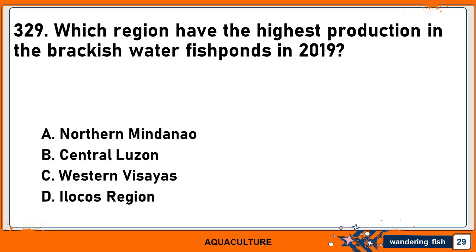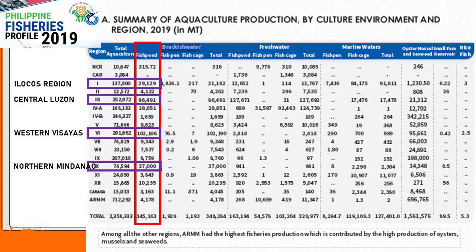Which region has the highest production in brackish water fish ponds in 2019? A. Northern Mindanao. B. Central Luzon. C. Western Visayas. And D. Ilocos Region. The correct answer is C. Western Visayas. After Western Visayas, Central Luzon has the second highest brackish water pond production, followed by Northern Mindanao in 3rd and Ilocos Region in 4th.